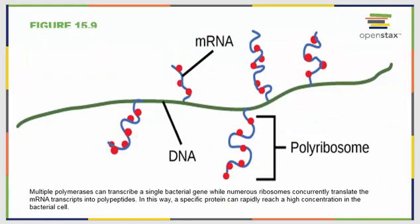Multiple polymerases can transcribe a single bacterial gene, while numerous ribosomes can concurrently translate the mRNA transcripts into polypeptides. In this way, a specific protein can rapidly reach a very high concentration in the bacterial cell. This cannot occur in eukaryotic cells because of the separation between machinery — mRNA is made inside the nucleus while all of the ribosomes are found on the outside.